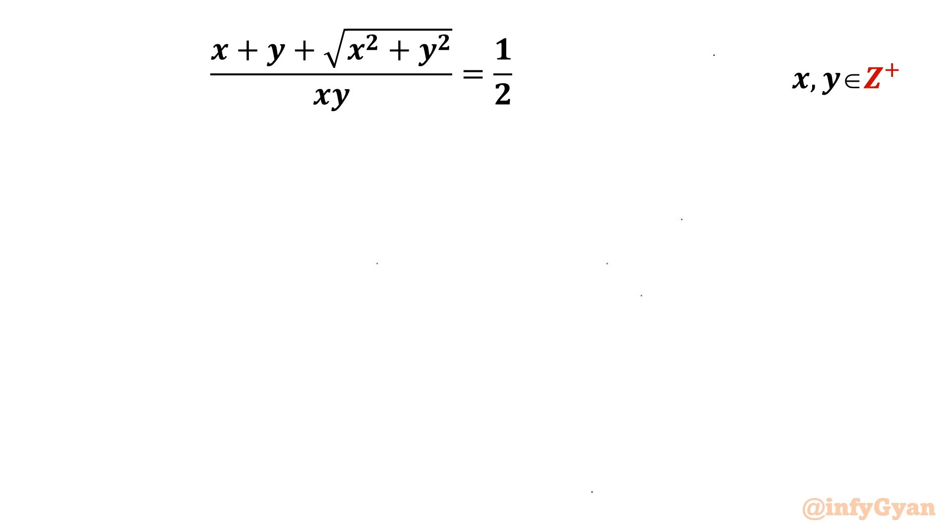Welcome back to Infigian friends. Today in this video we are going to take up one number theory challenge. It is from diophantine equation x plus y plus square root x square plus y square over xy equal to half. We have to find out all integer solutions.